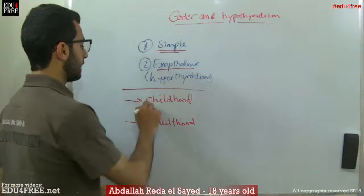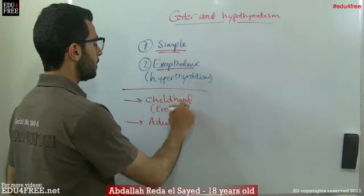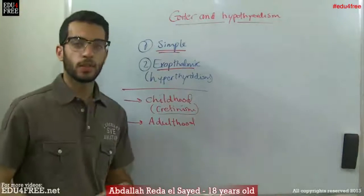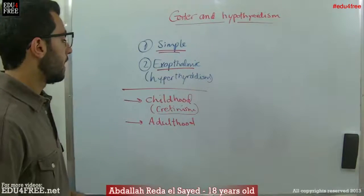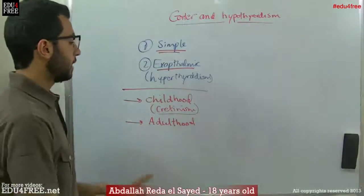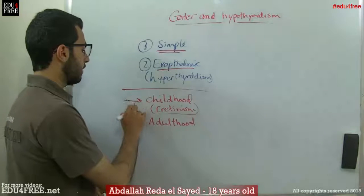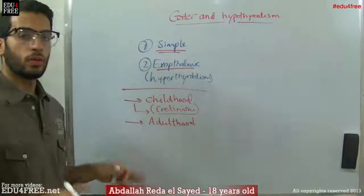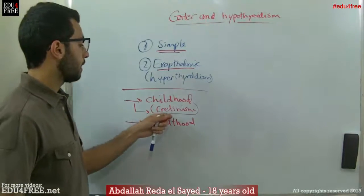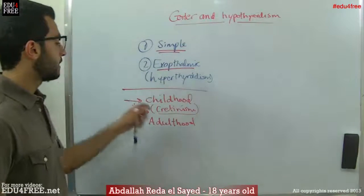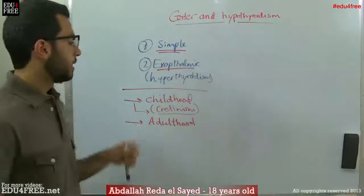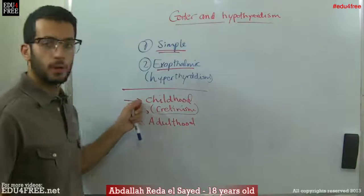In childhood, hypothyroidism leads to a condition called cretinism. In cretinism, the thyroid gland is suppressed, leading to a lower metabolic rate. This greatly affects the growth of the child, resulting in a large head, short stature, late sexual maturity, and a very long delay in physical and mental growth, causing permanent mental retardation.